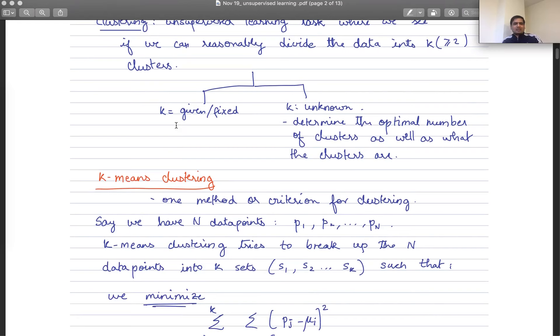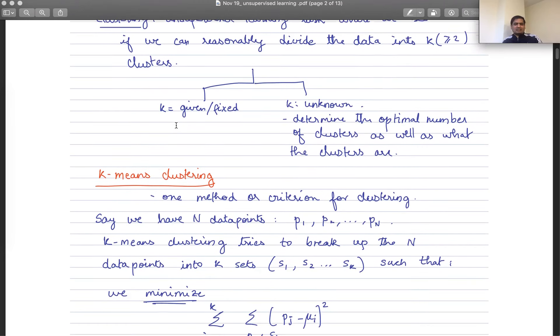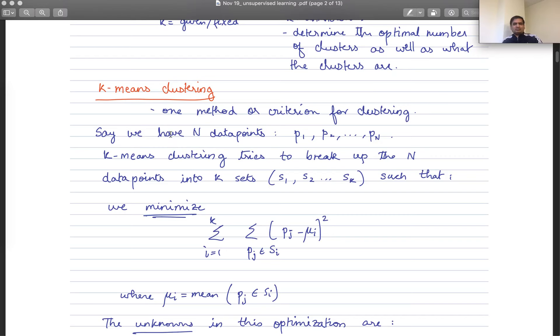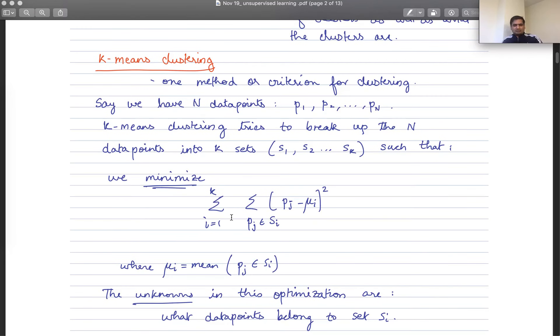So the first algorithm, or let's say criterion for clustering, the most common one is called K-means clustering. It's just one of many methods for clustering. Here's the idea. Say we have N data points, P1, P2, et cetera, to PN. K-means clustering tries to break up the N data points into K sets, K different sets. K could be two, three, four, whatever. Into K sets such that, most of machine learning is optimization. Here we are trying to minimize this quantity.